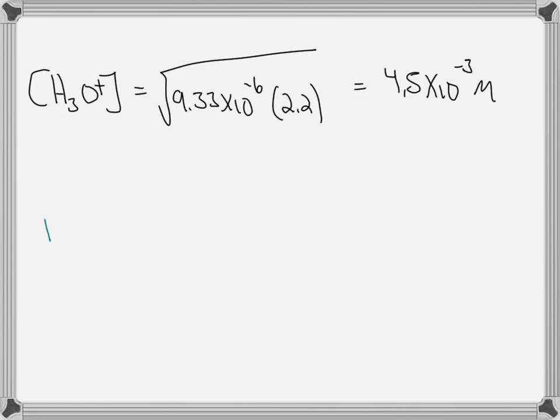We then take the negative log of this value in order to get pH. 4.5 times 10 to the negative 3 gives us 2.34 as our pH.